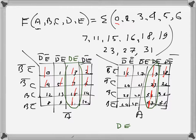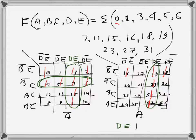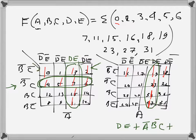Next, I can form another group that exists only in the first K-map. Since it is only in the first K-map, it will include ā. The columns covered give b̄c, so this group's expression is ā·b̄·c.